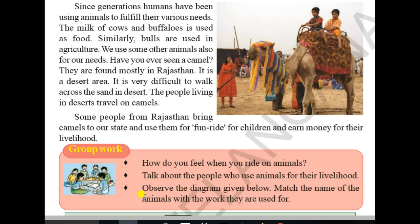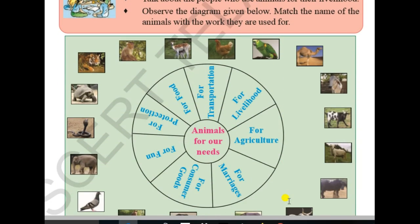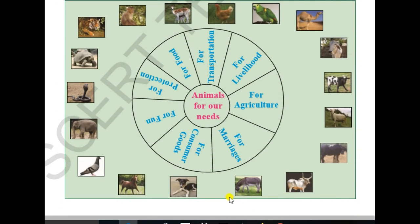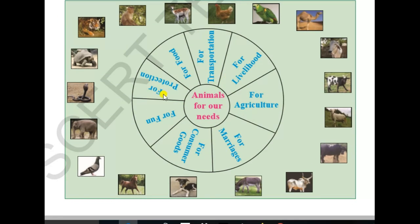Observe the diagram given below. Match the name of the animals with the work they are used for. The diagram is titled: Animals for our needs.